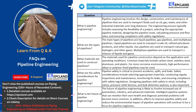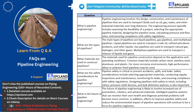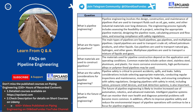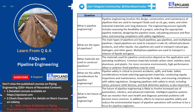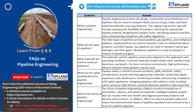New technologies, such as pipeline coatings and pipeline monitoring systems, can help mitigate environmental risks associated with pipeline transportation. Engineers are also developing new pipeline designs that reduce the potential impact of pipeline leaks and spills. In conclusion, the future of pipeline engineering is promising, with new technologies and materials emerging to improve efficiency, safety, and environmental impact. The use of automation, robotics, and advanced materials, along with intelligent pipeline systems, will likely play a significant role in shaping the future of pipeline engineering.